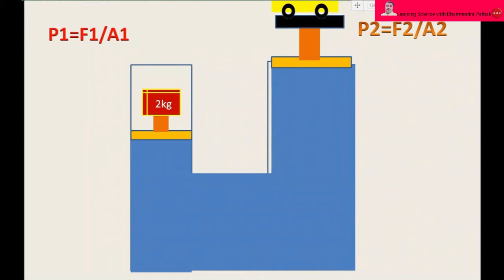Pressure developed on a small piston P1 equal to F1 by A1. Pressure developed on large piston P2 equal to F2 by A2.